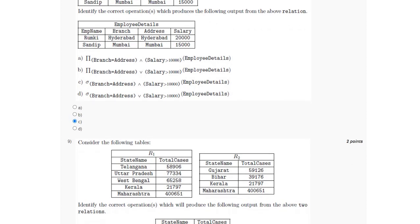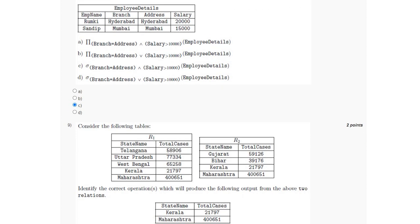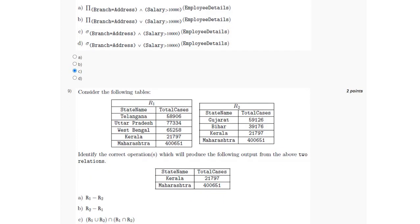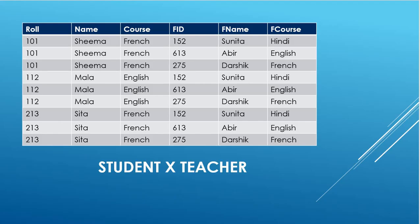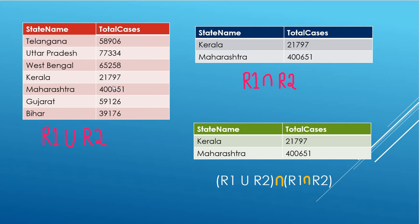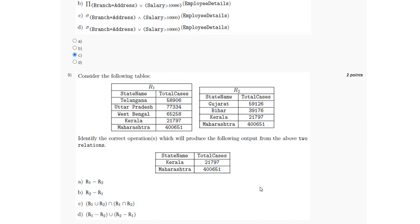For the ninth question, we are given tables R1 and R2 and have to identify the correct operation that produces the given output. R1 union R2 gives one result, R1 intersection R2 selects only rows common to both tables. The combination of union and intersection operations that gives the desired result is option C.